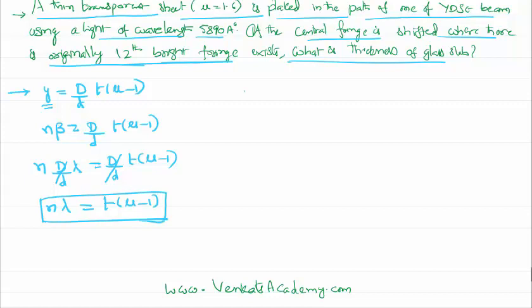n is 12, λ is 5890 angstrom converting that into meters, thickness we have to find out, refractive index is given as 1.6 minus 1. Simplifying this we can find the value of the thickness of the glass slab as 12 micrometers.